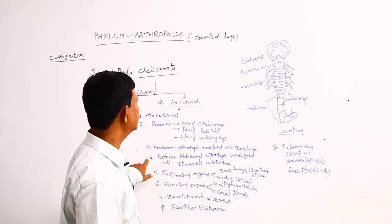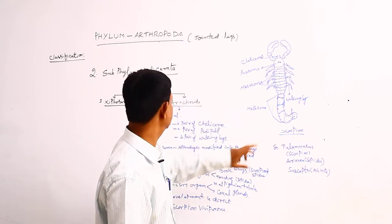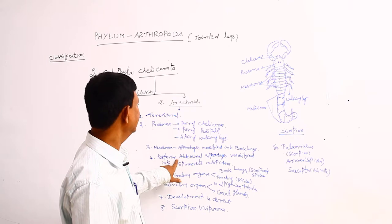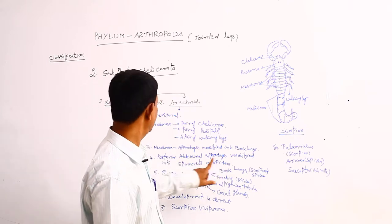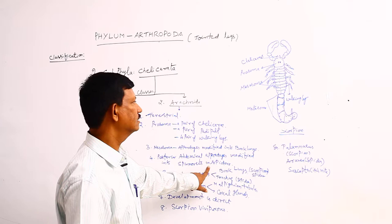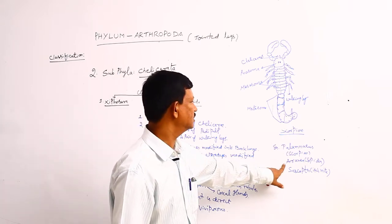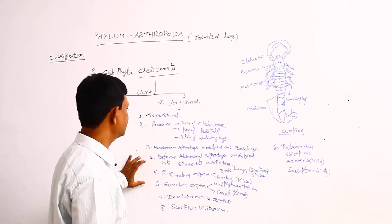And next, the posterior part of the segments is known as metasoma. Here, the abdominal appendages are modified into spinnerets in spiders. For example, spider - they are modified into spinnerets.